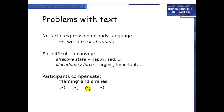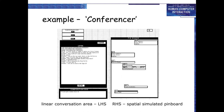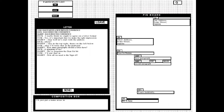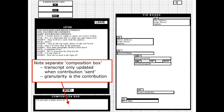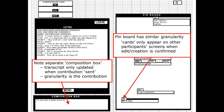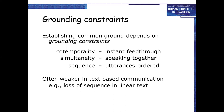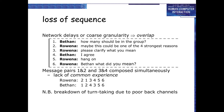Emotional force — urgent, important — is hard to convey; participants compensate with flaming and emoticons. Linear conversation areas have LHS and RHS, no separate composition box. The transcript is only updated when contributions are made, raising issues of granularity. Grounding constraints: establishing common ground depends on contemporaneity — instant feed to simultaneity — speaking together, and sequence — utterances being ordered. Sequence is often weaker in text-based communication. Network delays or coarse granularity can cause overlap and loss of sequence.